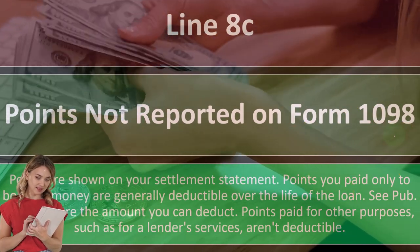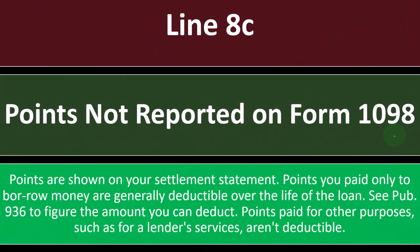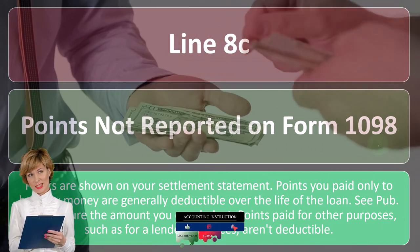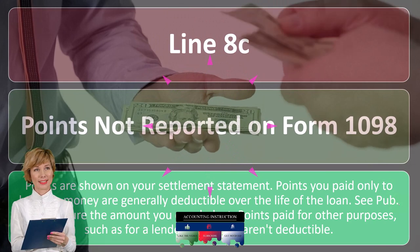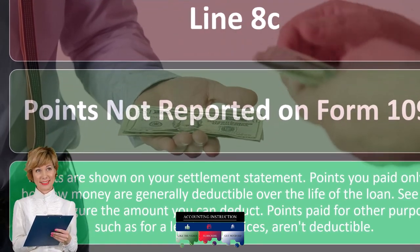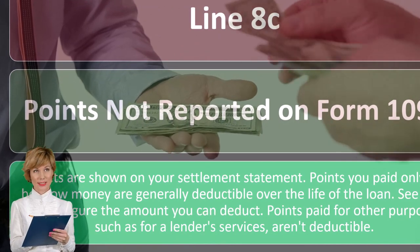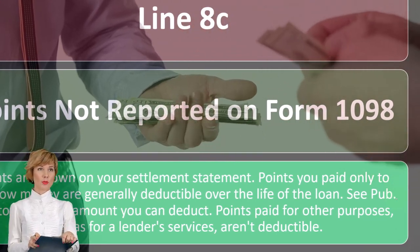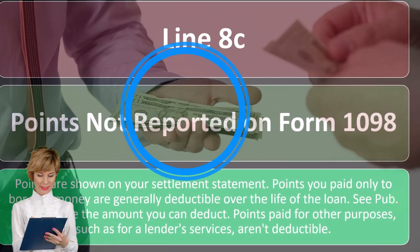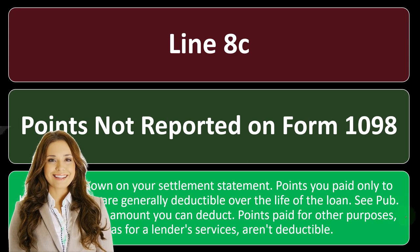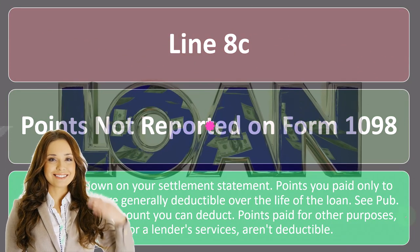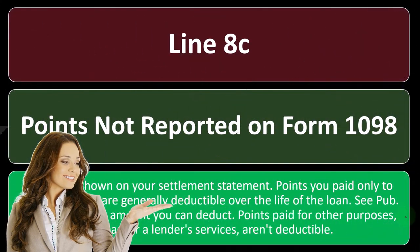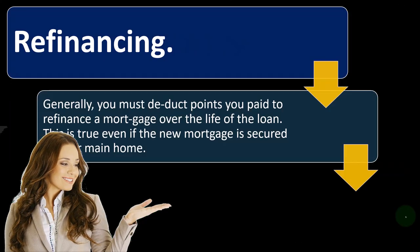They're getting better at reporting points, but they may not always be on the Form 1098. When the first purchase takes place, you might have to look at the closing documentation to determine the points and account for them — possibly amortizing them over the life of the loan. See Publication 936 to figure the amount you can deduct. Points paid for other purposes, such as for a lender service, aren't deductible.